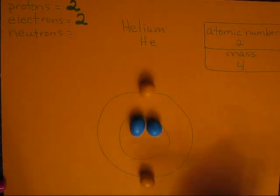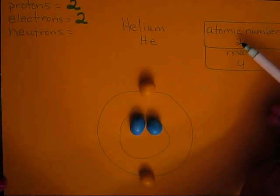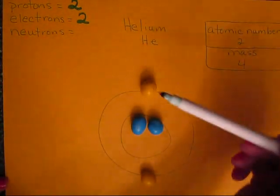So we got both of those numbers from the atomic number. 2 protons and 2 electrons.